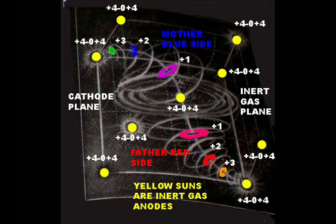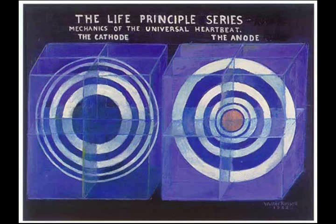This next image shows the division of mother blue spectrum lights and father red spectrum lights projected from four sexless rings of the invisible white light of the inert gases on the horizontal south inertial cathode plane of still magnetic light. The sphere in the center of the cube wave field is a central sun, pulsing back and forth from the anode condition of maximum compression and heat to the cathode condition of maximum expansion and cold.